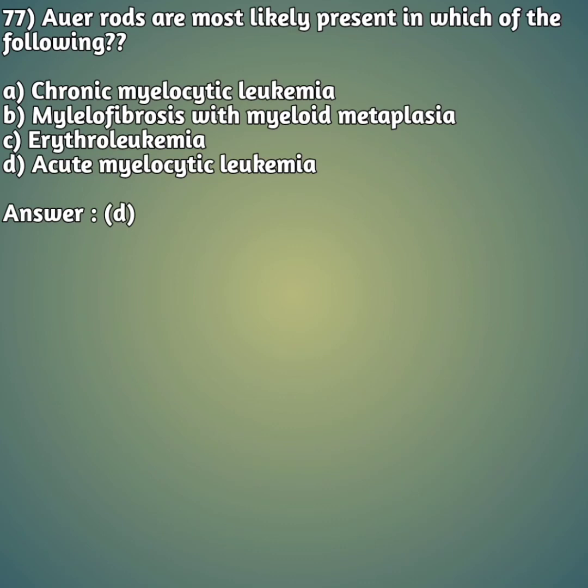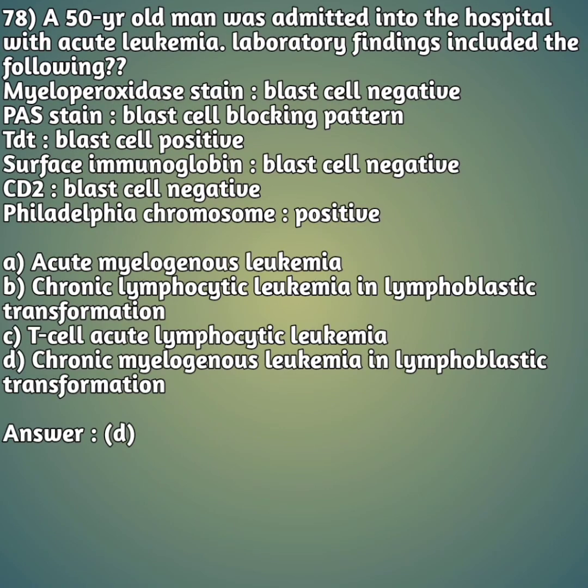Moving on to our 77th question: Auer rods are most likely present in which of the following? Option A: chronic myelocytic leukemia. Option B: myelofibrosis with myeloid metaplasia. Option C: erythroleukemia. Option D: acute myelocytic leukemia. Auer rods are most likely to be present in option D - acute myelocytic leukemia.